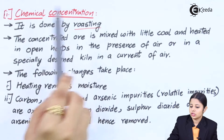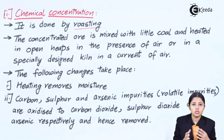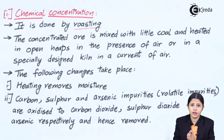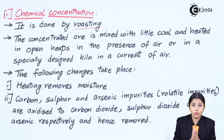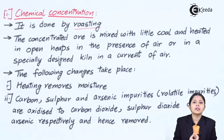Chemical concentration is done by roasting. Roasting is nothing but heating of the ore in the presence of air. You cannot heat the entire ore as it is. Firstly, you have to make sure that the ore is divided into fine powder and that powder is then heated. Because of this finely divided powder, the entire ore gets exposed to the air as well as heat, and this ensures uniformity and the presence of oxygen and heat to the entire ore.